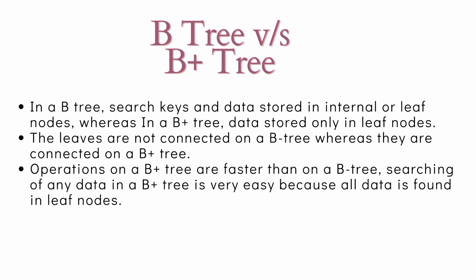That is the first major point and the second point, the leaves are not connected with each other on the B tree, whereas they are connected on the B plus tree.